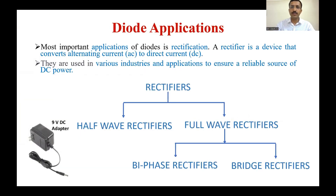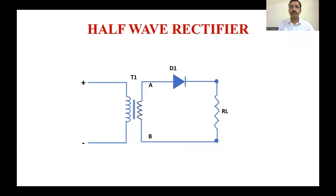So what is diode applications? Basically, rectification is one of the major examples of diode applications, where a rectifier is a device that converts alternating current to direct current. Rectifiers are classified as half-wave rectifier and full-wave rectifier. Full-wave rectifiers are further classified as center-tap rectifiers and bridge rectifiers. An adapter is one of the examples of the rectification process.